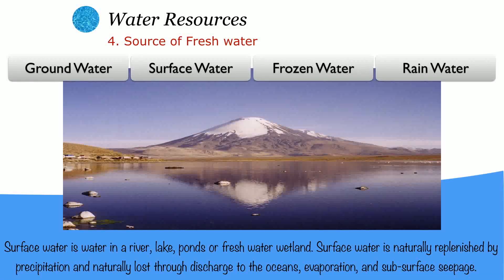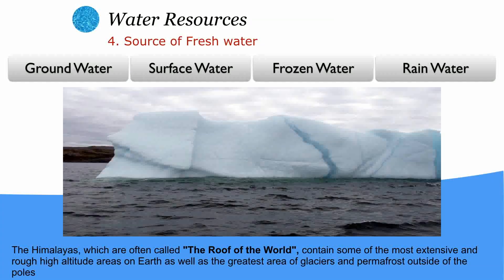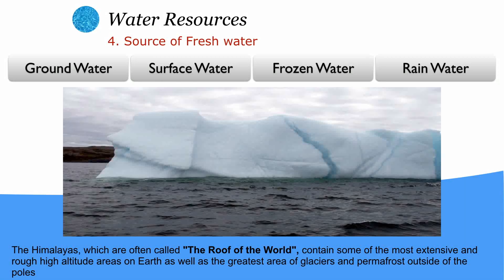Surface water means water in the form of rivers, lakes, ponds, etc., and is generally used for drinking and other purposes. Frozen water is available on mountain caps and in rivers; during summer, when the temperature is high, this frozen water melts and flows as rivers. Finally, rainwater is whatever water comes from rain, and that can also be used for drinking and other purposes.